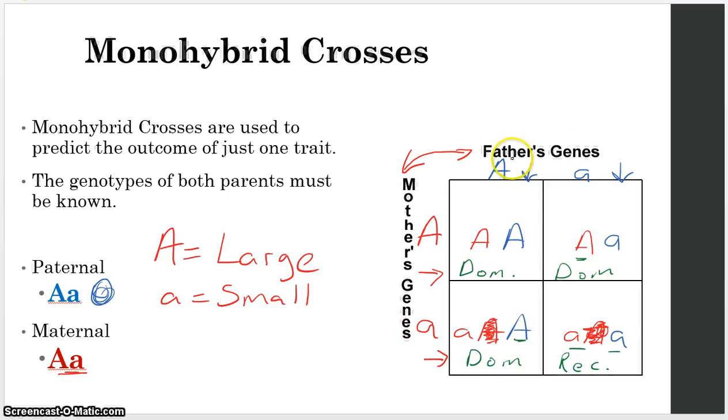And you're going to fill in every single monohybrid cross the exact same way. Put either the father's letters on top or the mom's letters on top. That's fine. Just drag both of them down and then all these on the left, drag them over to the right.